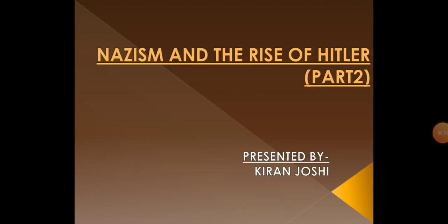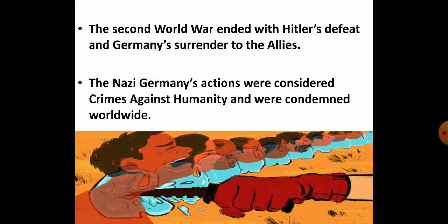Hello everyone, I am Kiran Joshi. Hope you all are safe and sound. Children, this is the third chapter of class 9 history, Nazism and the Rise of Hitler, and this is the second part of the chapter. In the previous video, we learnt about Hitler and the Nazi state and the defeat of Germany in the Second World War. We learnt that Germany's actions against humanity were condemned all over the world. Now let's see which were those actions that were considered against humanity.